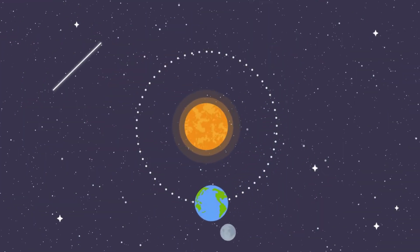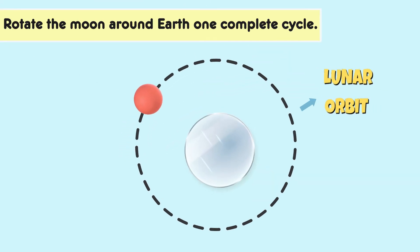Before you make your selection, consider what each of these actions represents and how they relate to natural phenomena. Rotating the Moon around the Earth would illustrate the lunar orbit, which is important for understanding the Moon's phases and eclipses, but it does not directly demonstrate the day-night cycle.